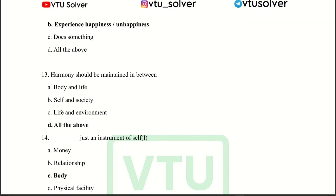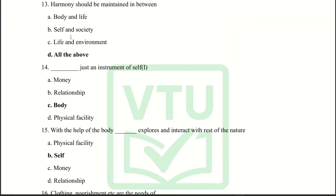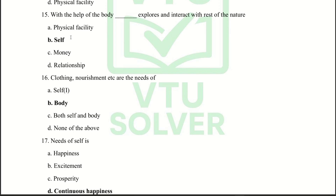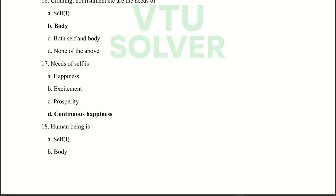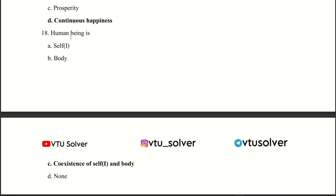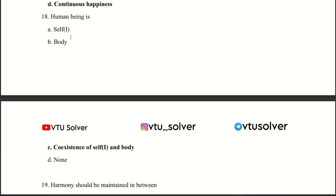Next question: Harmony should be maintained in between all of the above. Next question: Body is just an instrument of the self. Next question: With the help of the body, self explores and interacts with the rest of nature. Next question: Clothing, nourishment, etc. are the needs of the body.